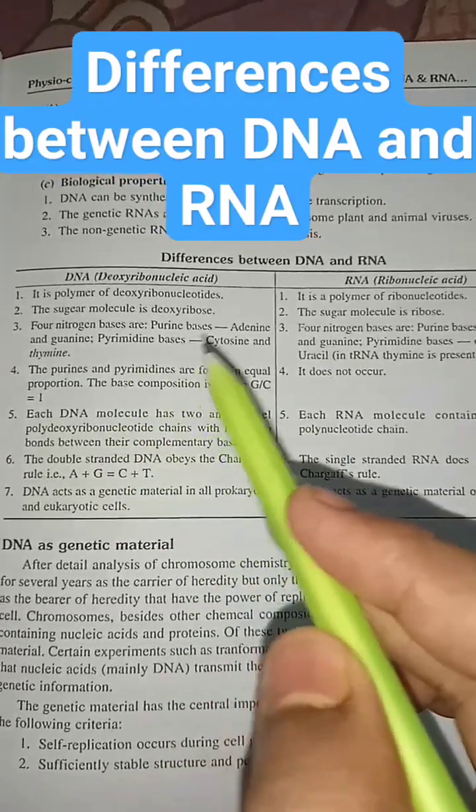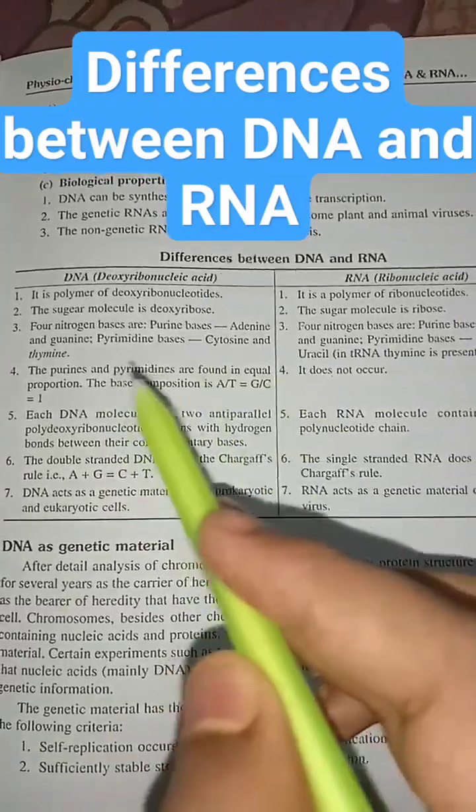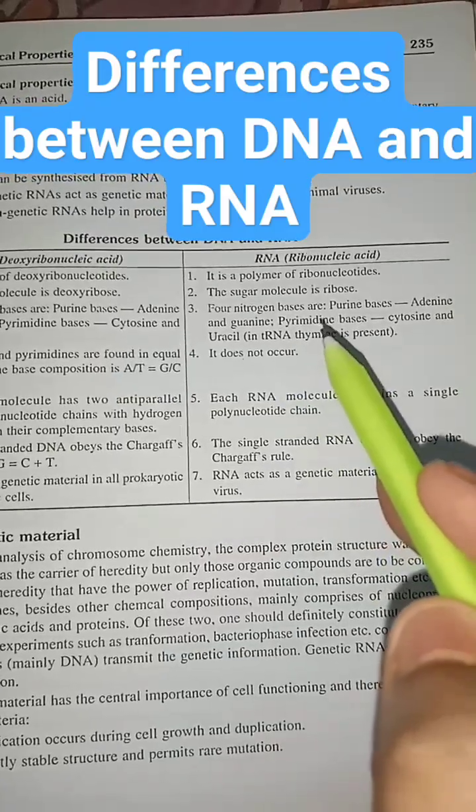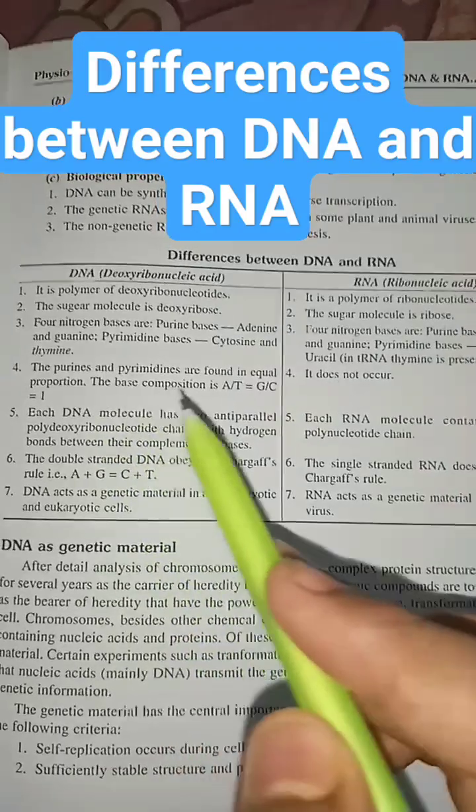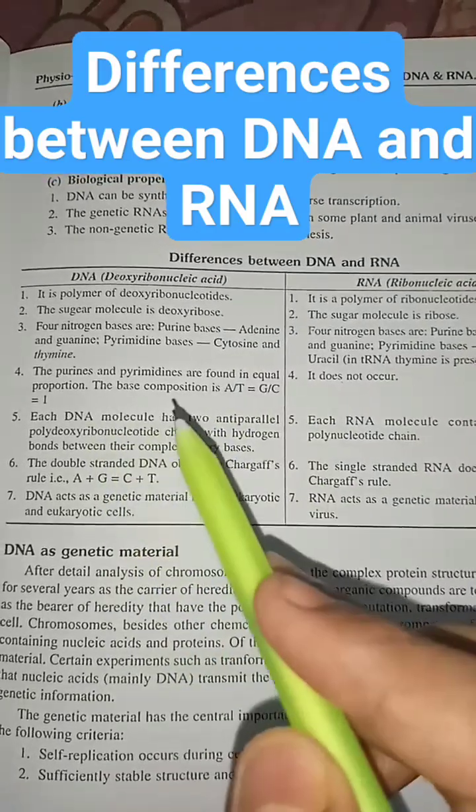Four nitrogen bases in DNA are adenine, guanine, cytosine, and thymine. Four nitrogen bases in RNA are adenine, guanine, cytosine, and uracil. The purines and pyrimidines are found in equal proportion.